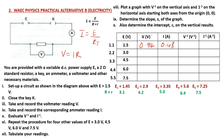For the next one, I have 2.9 divided by 4.2, which gives me 0.69. Then I multiply 0.69 by 2 to get 1.38. Next, I divide 3.35 by 5.3, which gives me 0.82. I record 0.82 and then multiply by 2 to get 1.64. Then I divide 5.8 by 6.4, which gives 0.90, and multiplying by 2 gives 1.80.